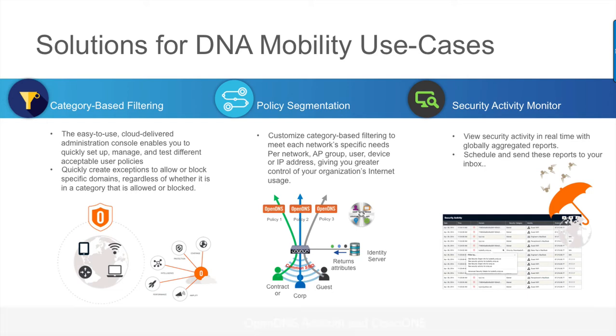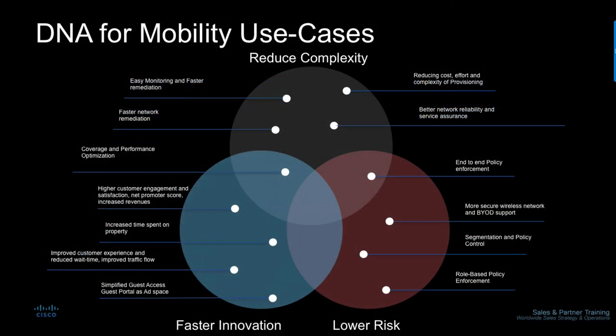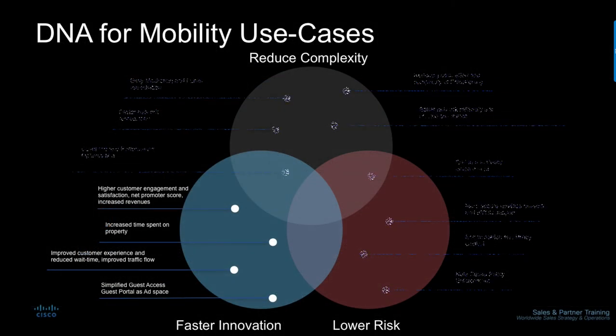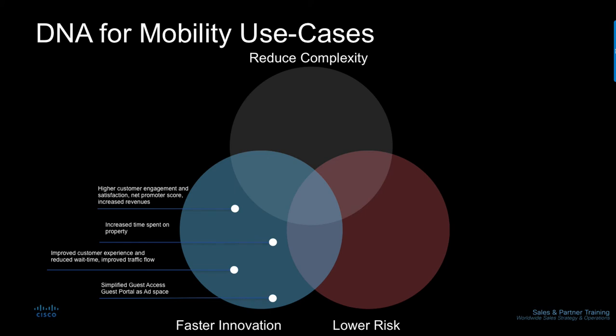As part of DNA for Mobility, the network needs to enable faster innovation by delivering deep insights on user behaviors, application performance, and trends. In order to personalize experiences, it needs to offer user engagement through onboarding and mobile applications, as well as analytics on content-relevant information like what users and devices are on the network and where. Some of the leading use cases here are higher customer engagement and satisfaction, higher productivity, increased time spent on property and increased retail revenues, reduced wait time and improved traffic flow, as well as wayfinding and proximity messaging.